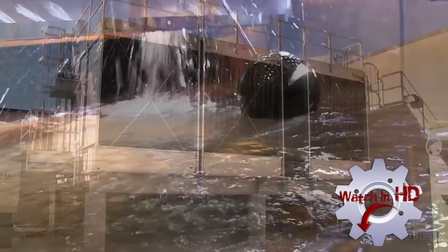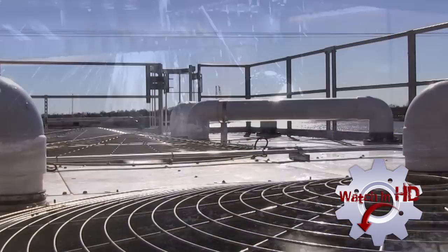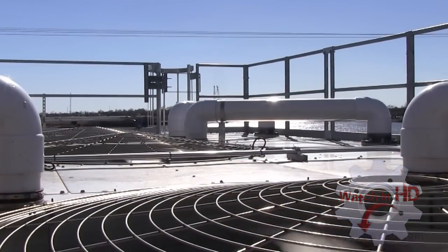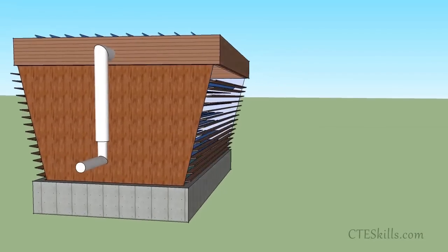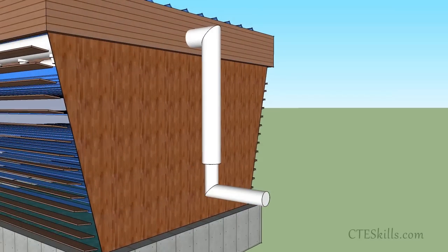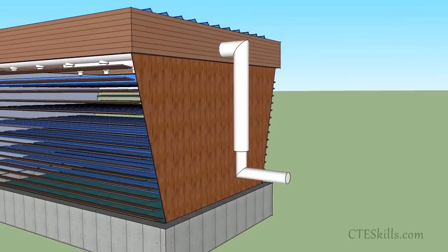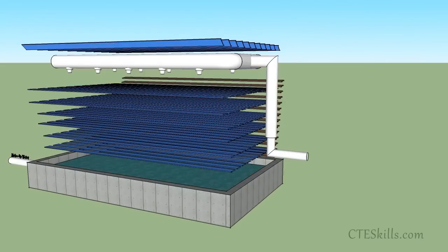Cooling towers are devices used to transfer heat or cool water for reuse. The basic operation is fairly simple. Hot water is pumped in from an outside source and sprayed into the tower. The hot water flows over what is called the fill. This spreads the water over a larger surface area to allow for more cooling.